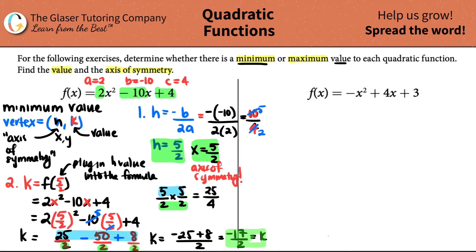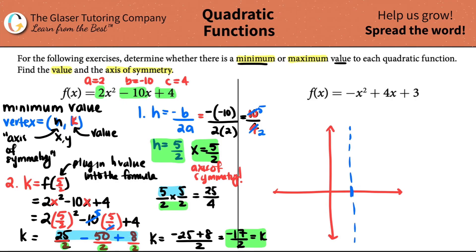That is your minimum value. To give some context: the axis of symmetry was 5 over 2, so somewhere over here on the X axis, and the minimum value is negative 17 over 2 — a little bit below negative 8. That's your minimum value. The graph turns there, because this vertex would be 5 over 2 comma negative 17 over 2.